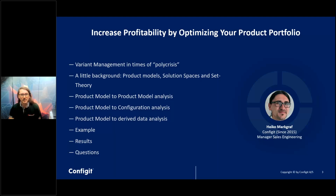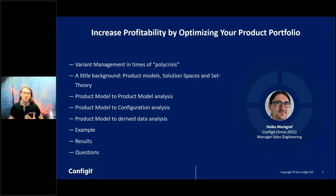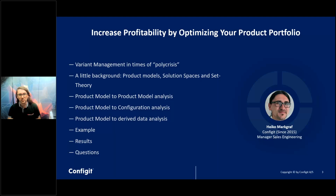Then I will show you different analyses you can do with our technology, where we compare product model solution spaces with other product models, or product models with configurations and also with derived data. I have a small example so you get an idea how to do these analyses in our tools. We will talk about results — what benefits we get if we optimize our variant management and our portfolio — and there will be a small Q&A at the end.